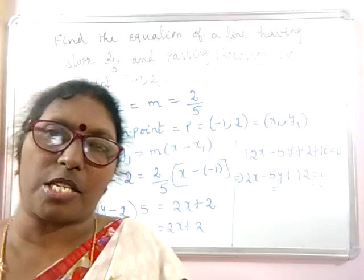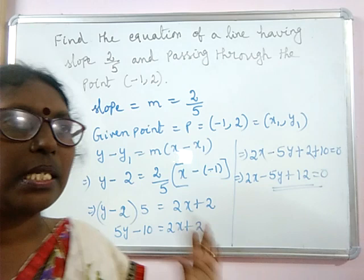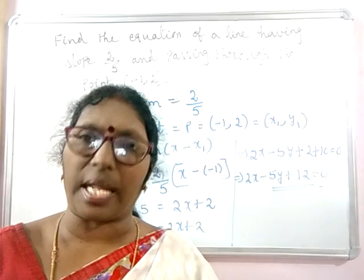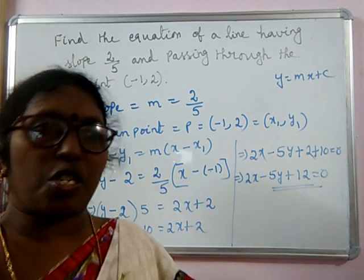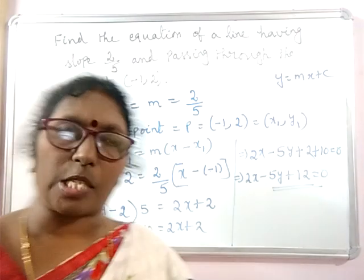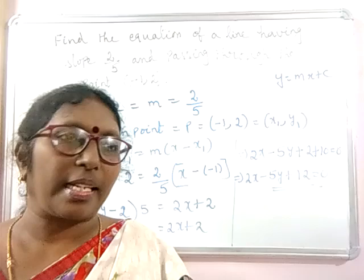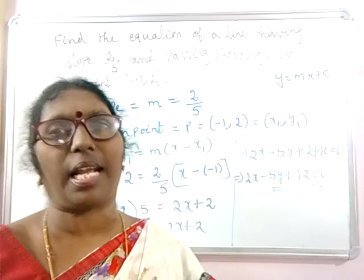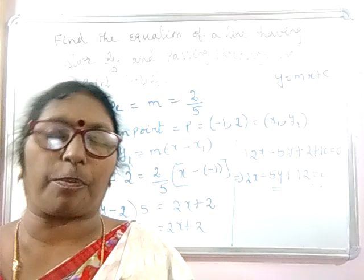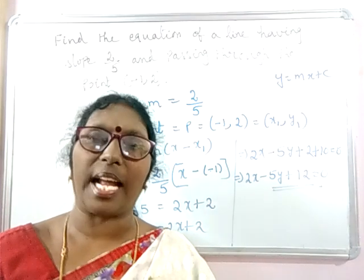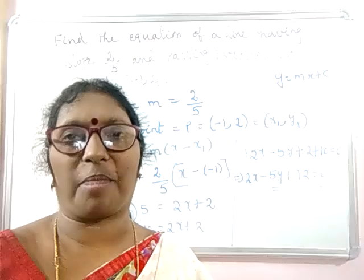So by now you have learnt two forms. One is the slope-intercept form, y = mx + c — if you know the slope and y-intercept you can find the equation of the line. The other is the point-slope form, y − y₁ = m(x − x₁) — if you know the coordinates of a point and the slope you can find the equation of the line. In the next class you will learn the two-point form. I hope this is clear. Please go through the lesson, make the concept clear, and you will be able to do the exercises easily. Please like the video and subscribe to the channel. Thank you.